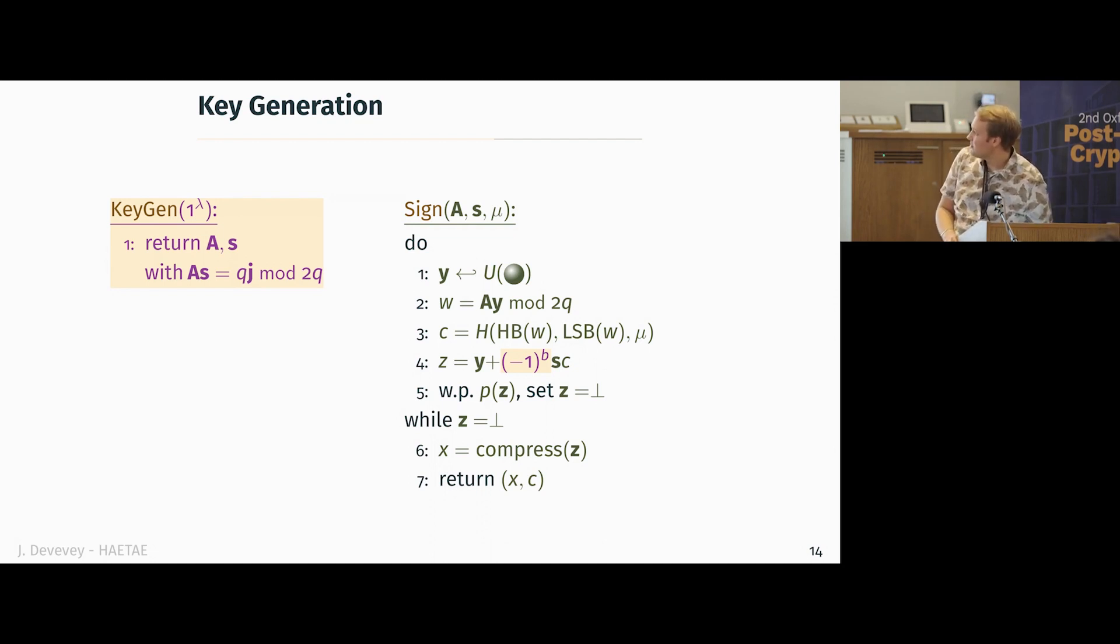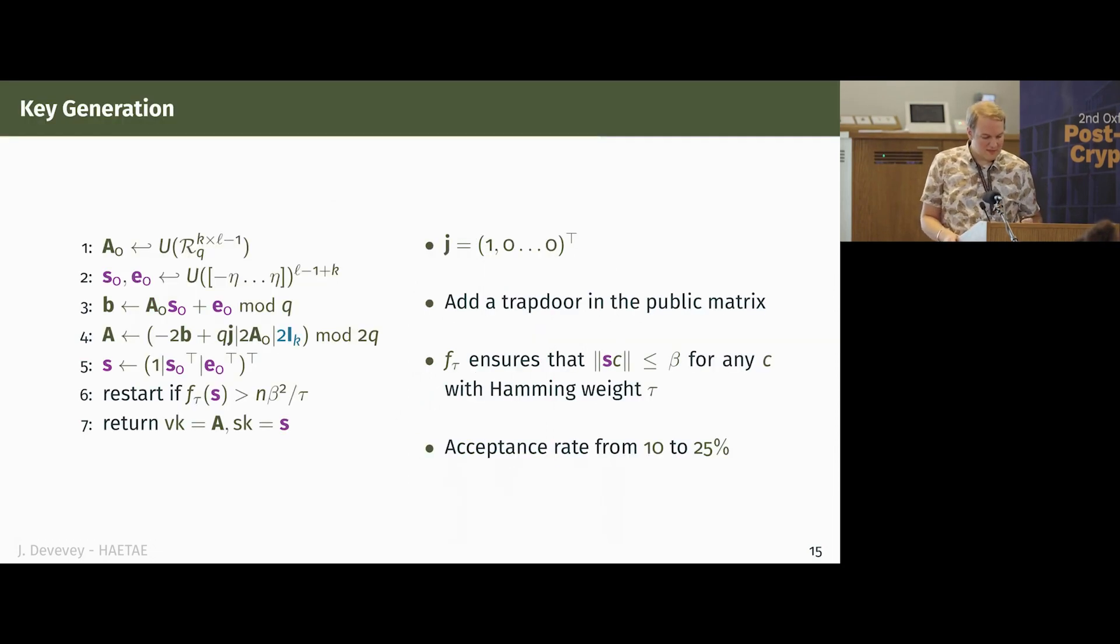Next, I want to briefly talk about the key generation algorithm. It's actually quite easy. We first generate an LWE sample, and we use that to add an extra column in our public matrix, which will serve as a trapdoor. So by doing so, we can actually map As to anything we want. It suffices to replace the qj on line four with whatever you want.